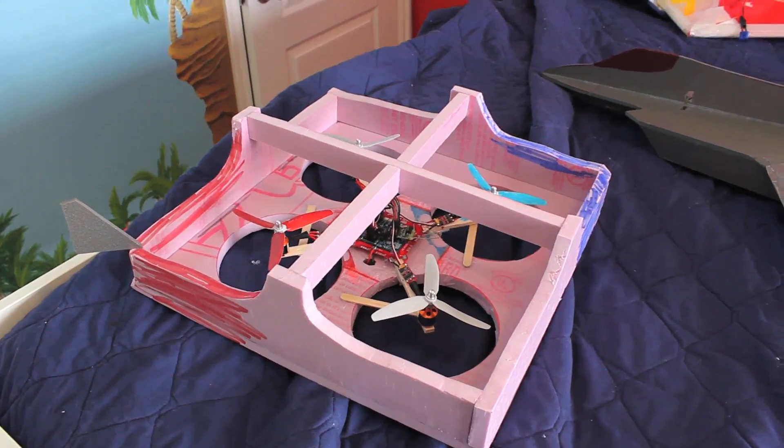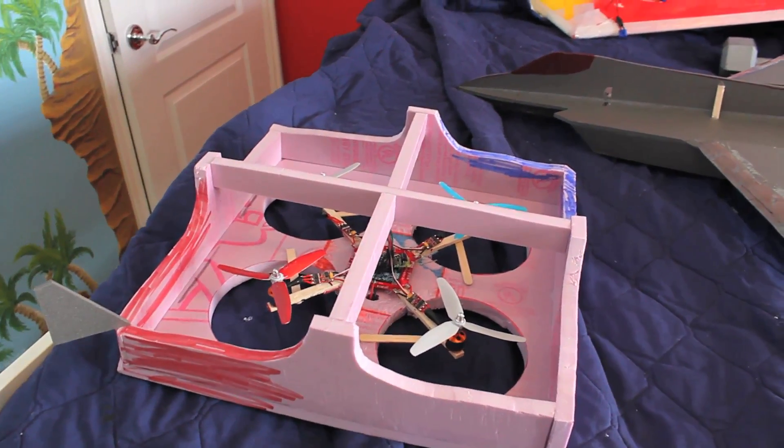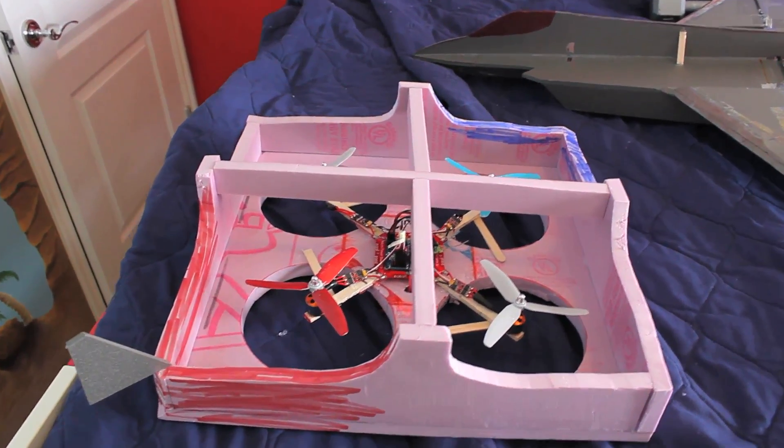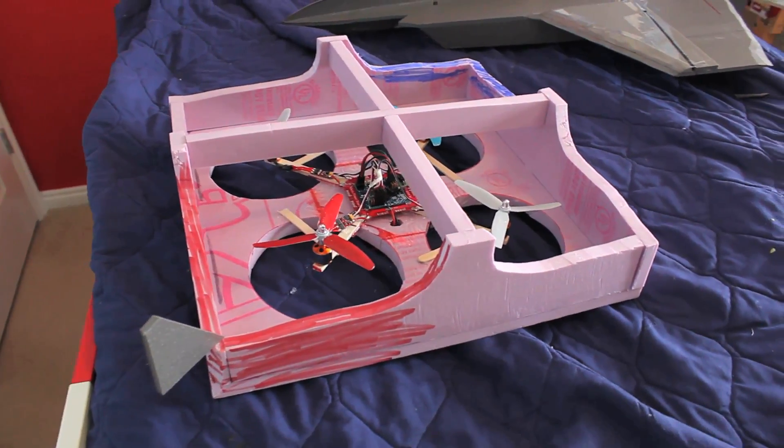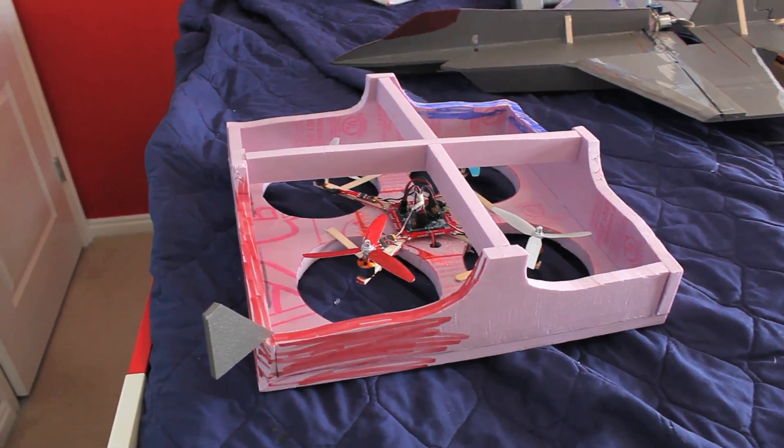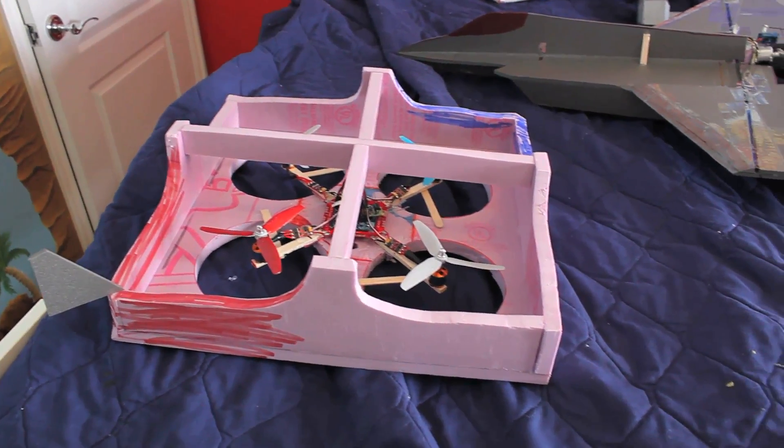I really suck at flying these things. I can hover it alright when it's facing away from me, but right when it faces towards me or sideways, then I lose orientation and crash it. So I built this little foam box around it. It'll hopefully protect it on some of the crashes, and I can be more daring when I'm flying it and learn better, hopefully.